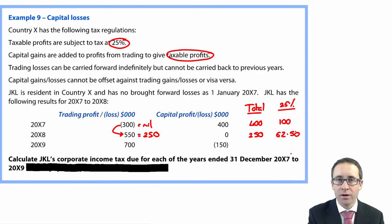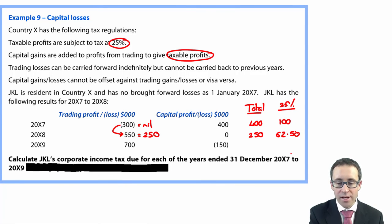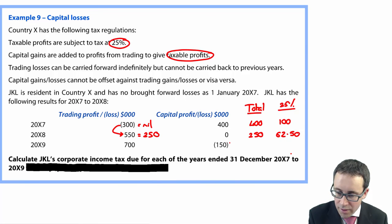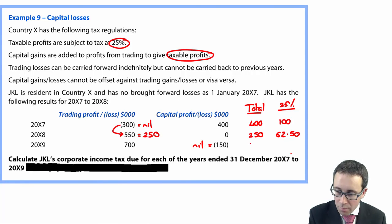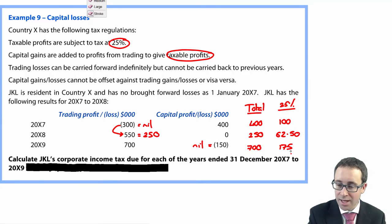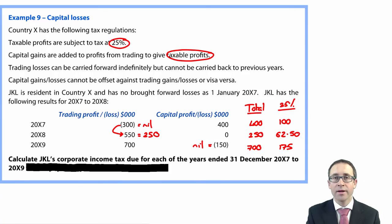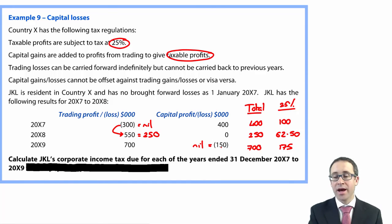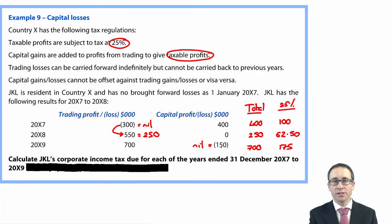In X9, there's trading profit of 700 with no trading losses to relieve against it. The capital loss cannot be relieved against the trading profit, so that capital loss figure is nil and would be carried forward. Total profits are 700, and at 25%, the tax is 175. The capital loss of 150 will be carried forward as a capital loss to be relieved against future capital profits.